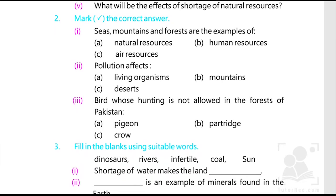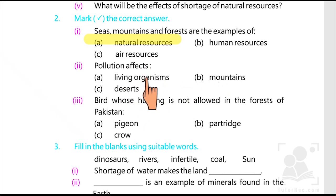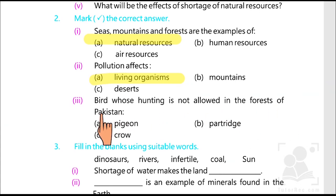Now we have to mark the correct answer. The first one says seas, mountains and forests are examples of natural resources. Pollution affects living organisms. Organism means a particular creature that takes breath, has growth and development. So mountains and deserts are also included — this is one complete answer.